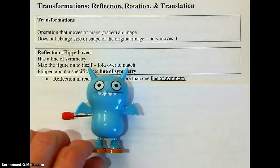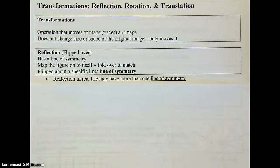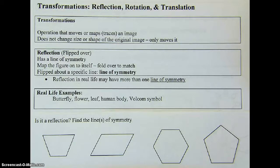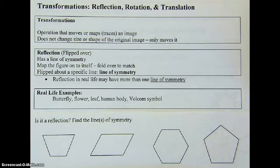In real life, many things have more than one line of symmetry. Think of things in nature and things man-made. Some real-life examples include a butterfly, most flowers, a leaf if it's perfect, the human body, and symmetry is also used a lot in advertising — like the Vulcan symbol — because it's pleasing to the eye. See if you can come up with a few on your own.